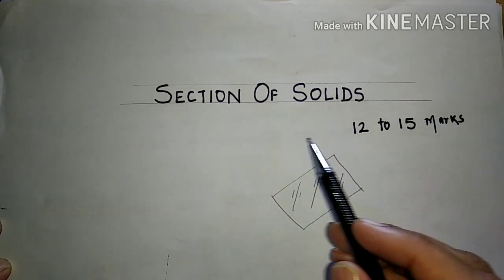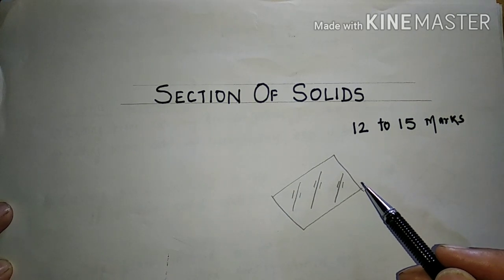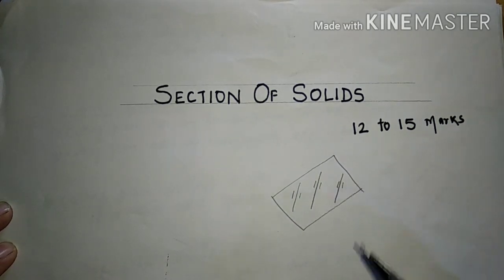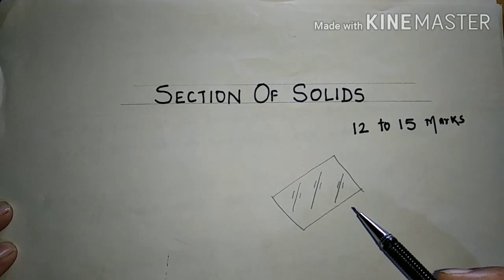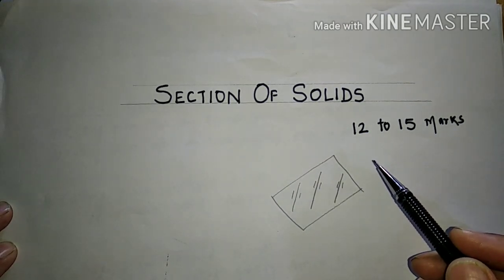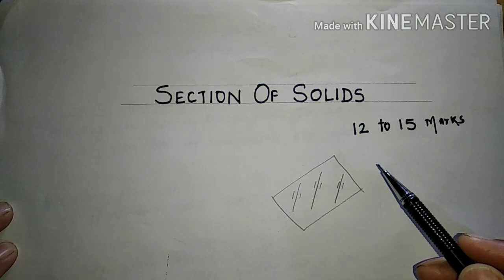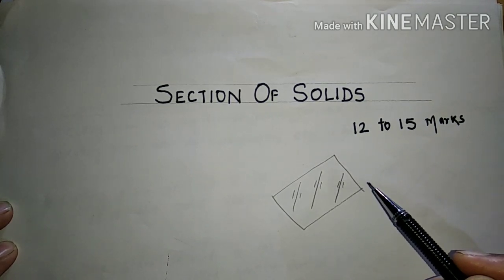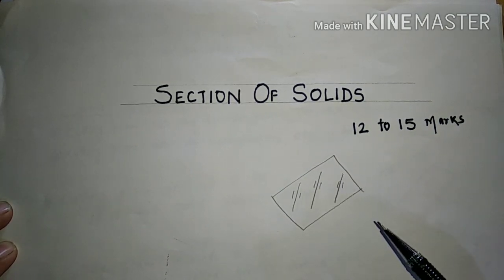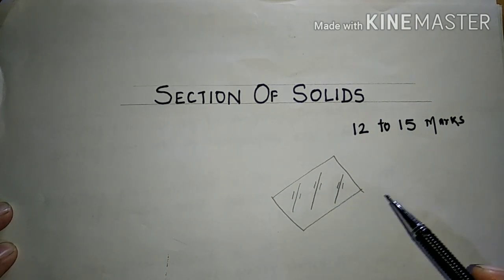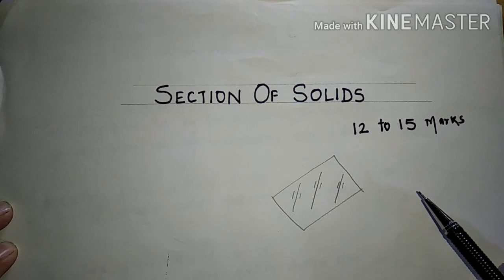For section of solids, we assume one cutting plane which is an imaginary plane and transparent in nature. It will cut a regular solid in such a way that the part nearer to the observer will be removed and the part away from the observer will be retained. This cutting plane is generally represented by a single line which is similar to a center line.